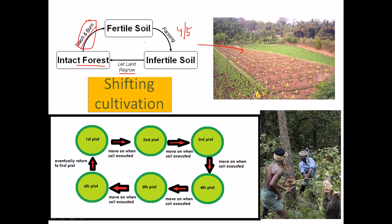This is the circle of shifting, which is why we call it shifting cultivation. In this cultivation technique we need different areas — two or three different areas — for cultivation over several years. As you can see in this next picture, there are different plots: first plot, second plot, and so on. When one plot's soil becomes infertile, we move on to the next plot, then the third, and we go on like this.